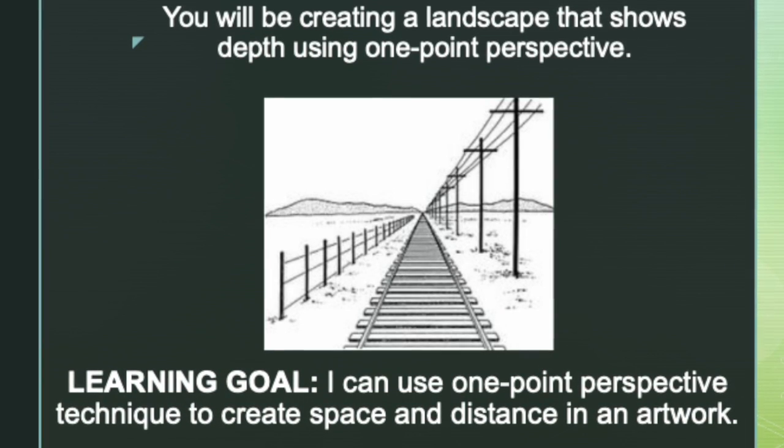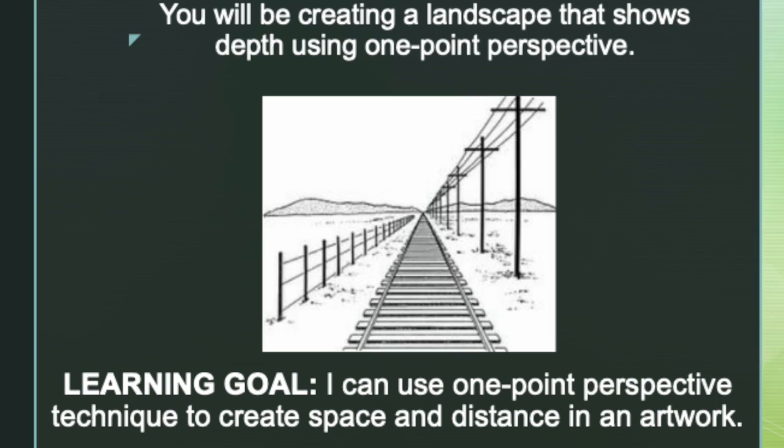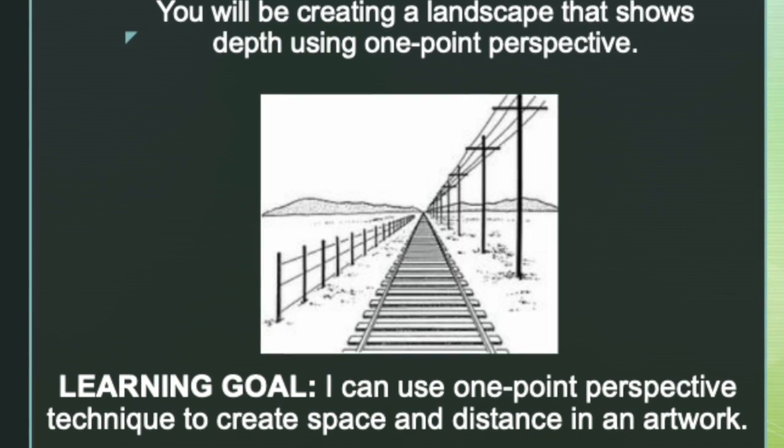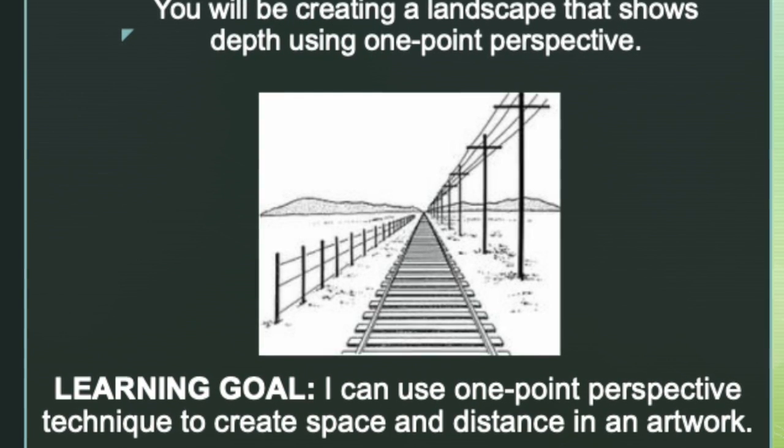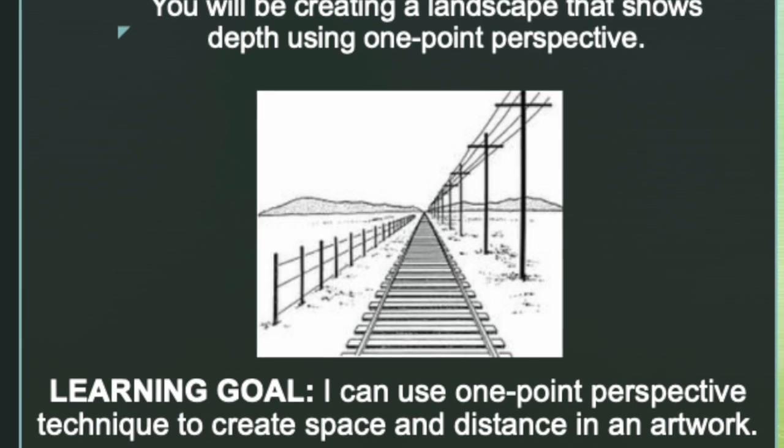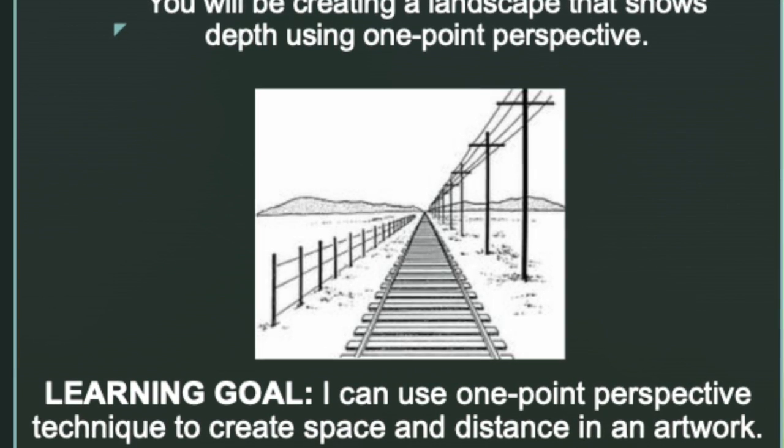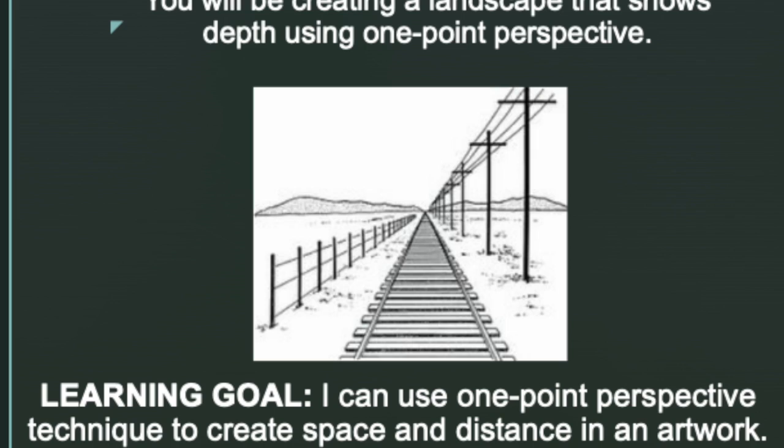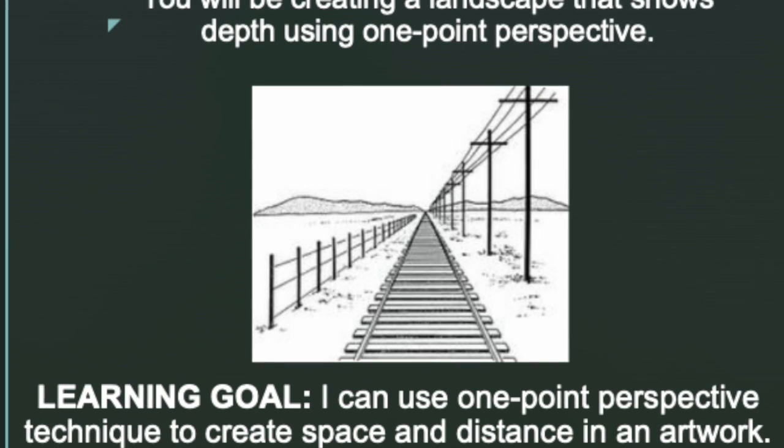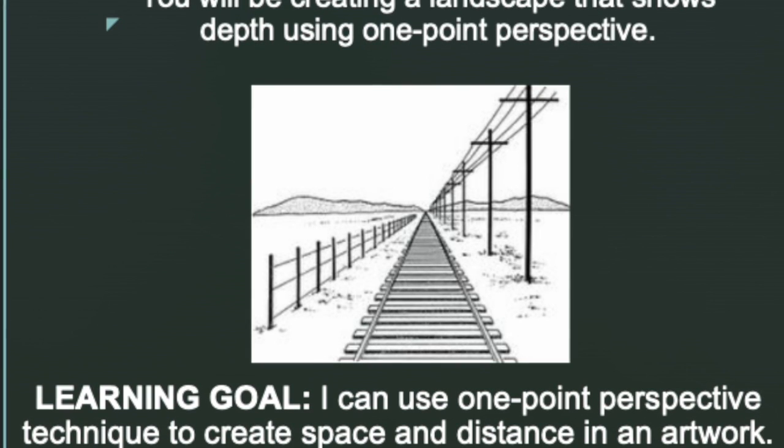Notice the railroad tracks, the telephone poles, and the fence. Notice how they're large and they get smaller as they go back into the distance and meet at that one point on the horizon line? That is one-point perspective.